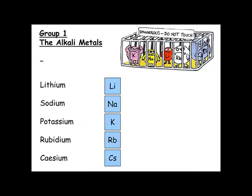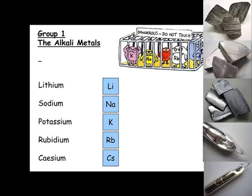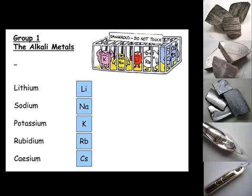We'll start by looking at Group 1, the Alkali Metals: Lithium, Sodium, Potassium, Rubidium, and Cesium. We're going to be looking at patterns and trends in their reactivity as we go down the group, and the reasons for those patterns and trends.